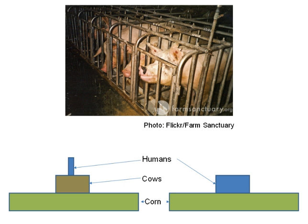Cows, pigs, and chickens all eat plants because it would be incredibly inefficient to raise carnivores for food on a large scale. If we had to add yet another step — feed the corn to cows, then feed the cows to dogs, and then eat the dogs —